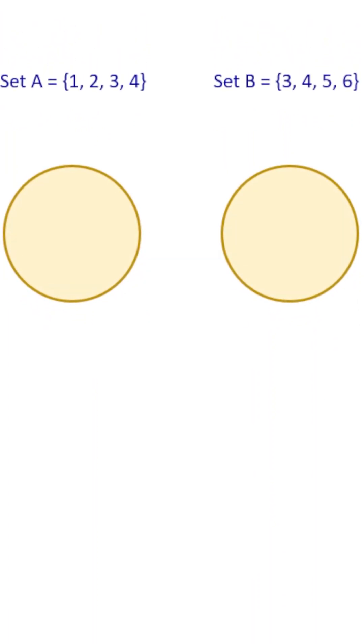Here's a Venn diagram representing two sets. Set A contains 1, 2, 3, 4, and set B contains 3, 4, 5, 6.